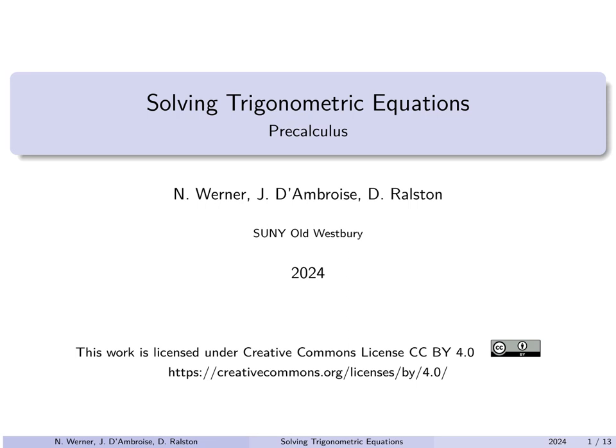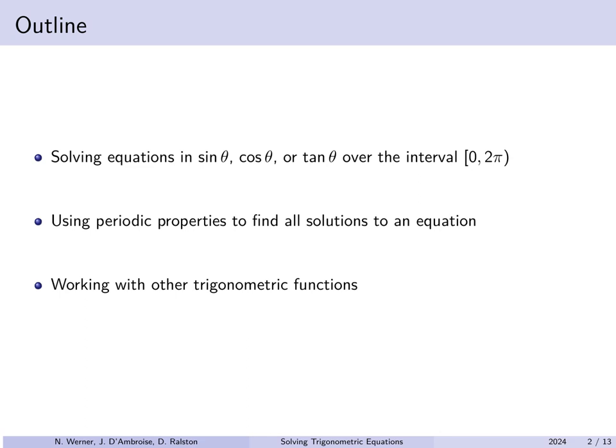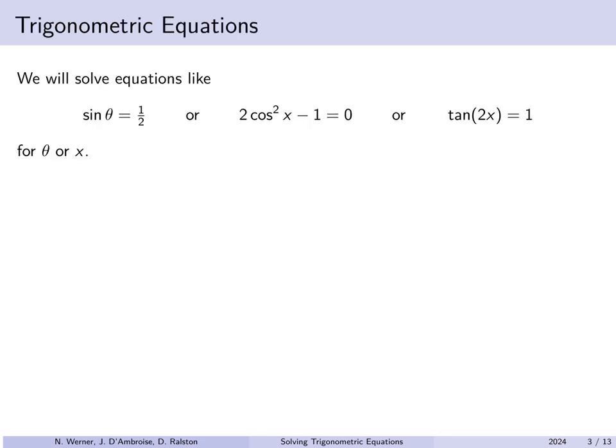Hello. In this lecture we'll study solving trigonometric equations. We're going to solve equations in sine, cosine, or tangent over the standard interval 0 to 2π, then use periodic properties of these functions to find all solutions — not just between 0 and 2π — and then work from there to solve trigonometric equations in general. So we'll solve things like: for which θ is sin θ = 1/2, for which x is 2cos²x − 1 = 0, or for which x is tan(2x) = 1.